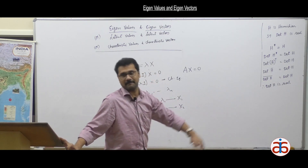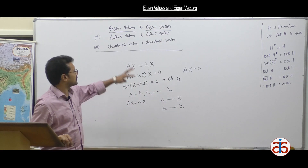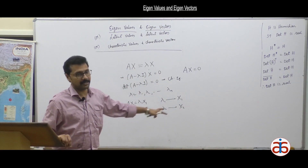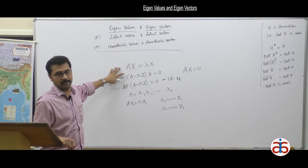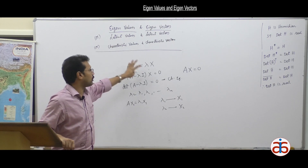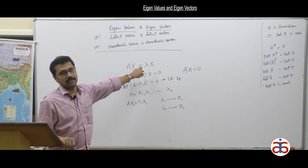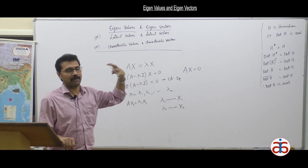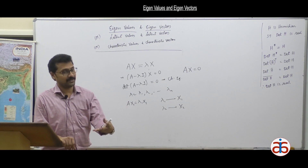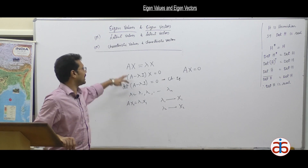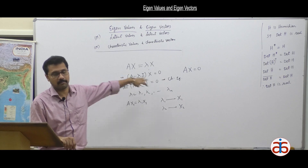This entire system is called the eigenvalue problem: if you are able to find all those eigenvectors X — non-zero eigenvectors for specific values of eigenvalues lambda — such that Ax equals lambda x, that is the eigenvalue problem.